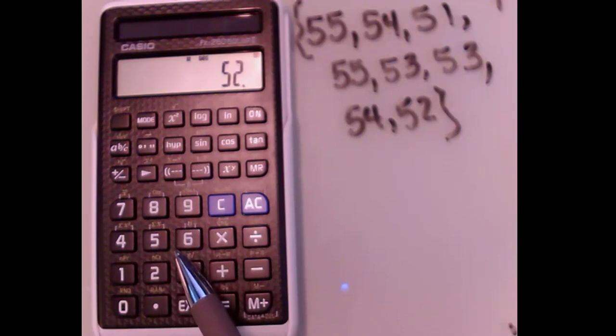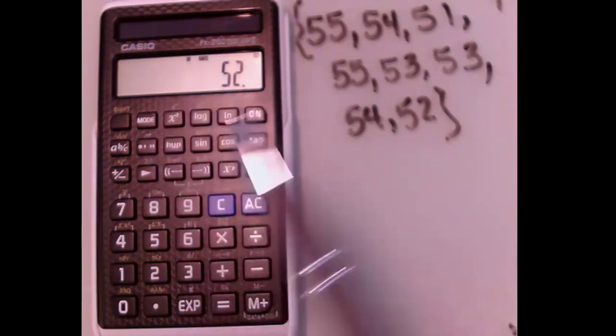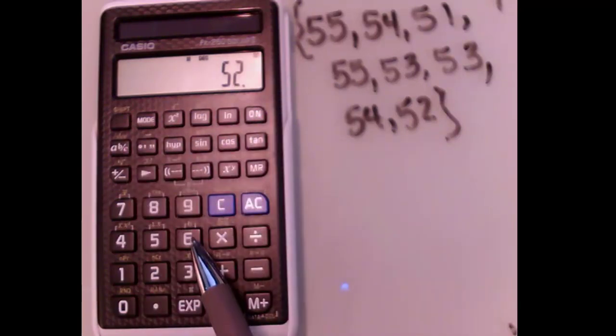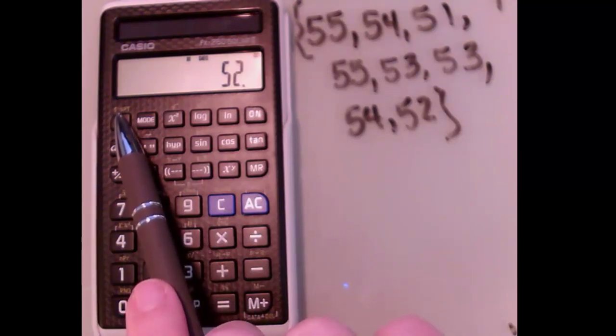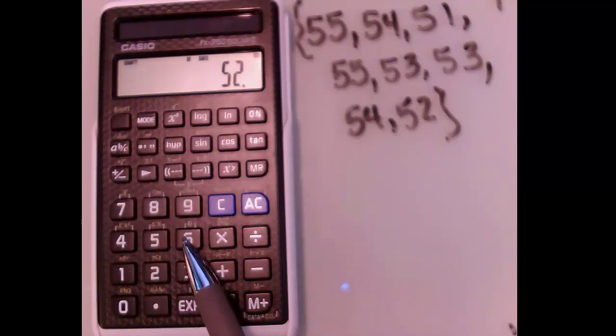This one right here is how many numbers did I have in my data set. So the data's already in. And so now if I want to hit N, because it's in yellow, I have to hit shift first. So if I do shift 6,